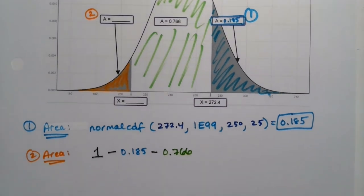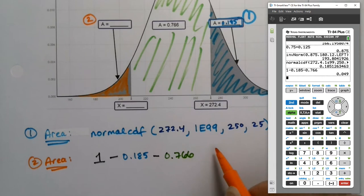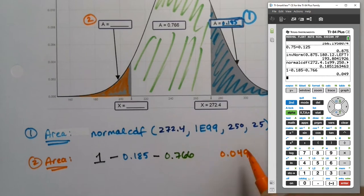And this is what I did wrong the last time, so let me do this right. 1 minus 0.185. Oh, see, I'm doing it wrong again. 0.185 minus 0.766, enter. And I get 0.049. So I know that that little orange zone is 0.049.